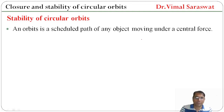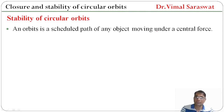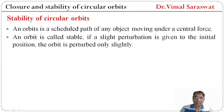An orbit is a scheduled path of any object moving under a central force. The characteristics of central force have been discussed in our earlier lecture, the link of which is given in the description box. An orbit is called stable if a slight perturbation is given to the initial position and the orbit is perturbed only slightly.